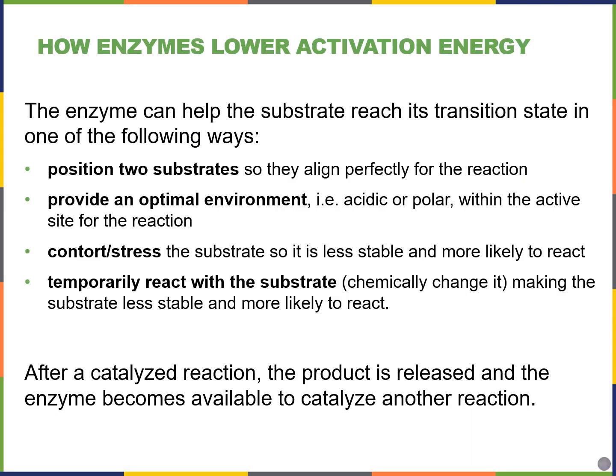How do enzymes lower the activation energy for an endergonic or exergonic reaction? They help the substrate reach the transition state in one of several ways: they can position two or more substrates so they align perfectly for the reaction to happen, or they can provide an optimal environment for the reaction. There are specific amino acids in the active site that might be acidic, water-loving, or polar, so that the substrates will be more likely to bind and align together for the reaction to happen.